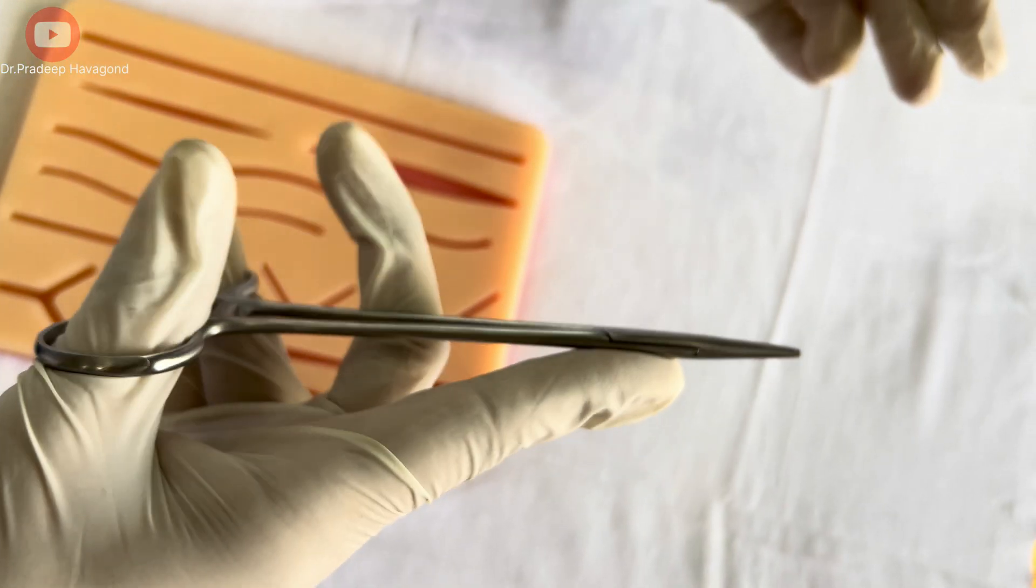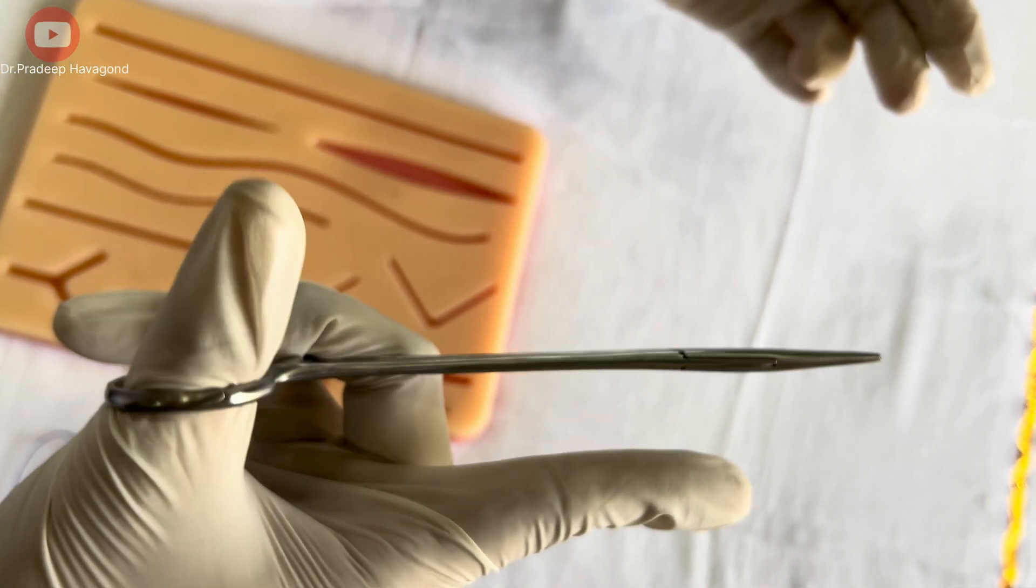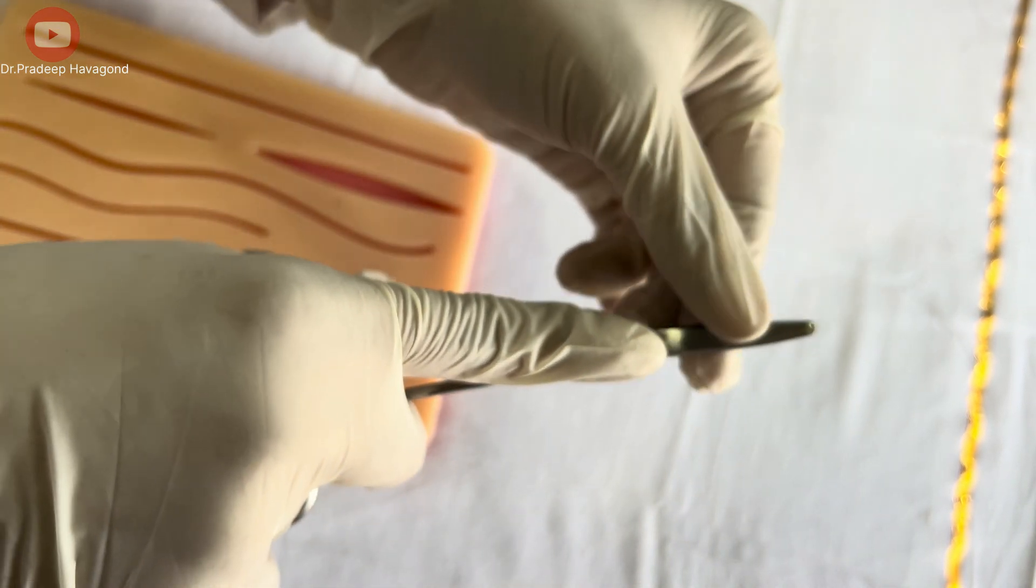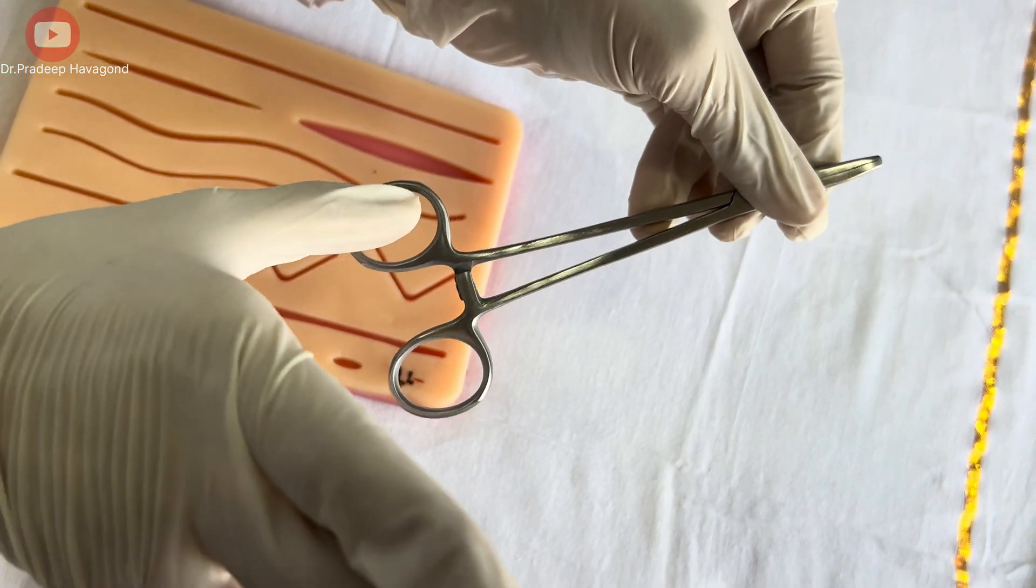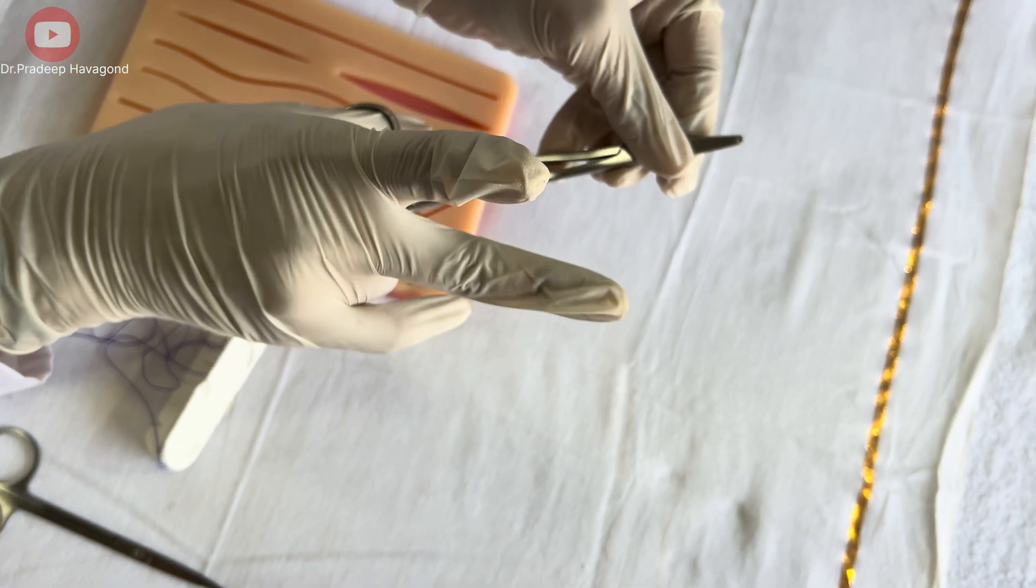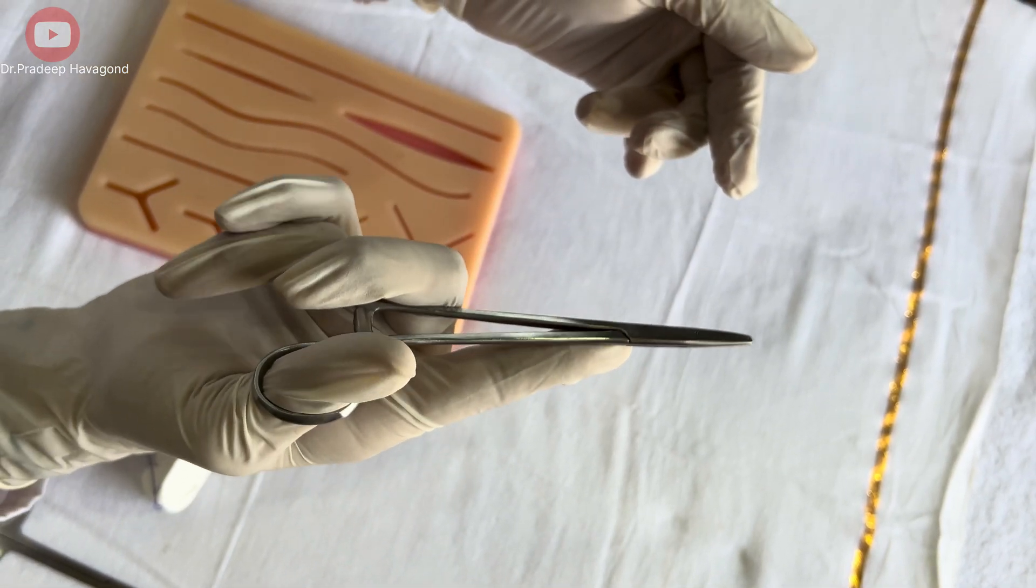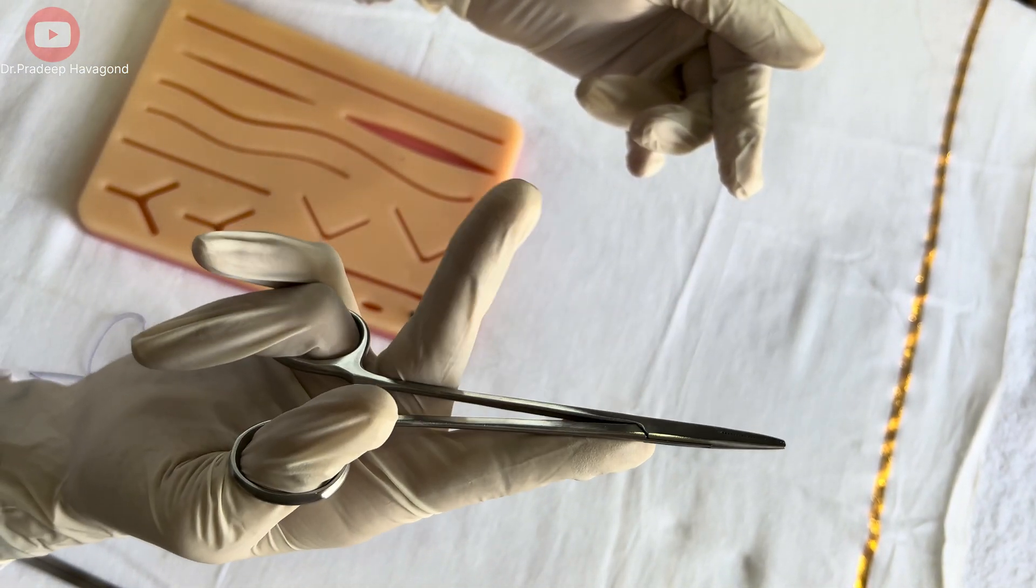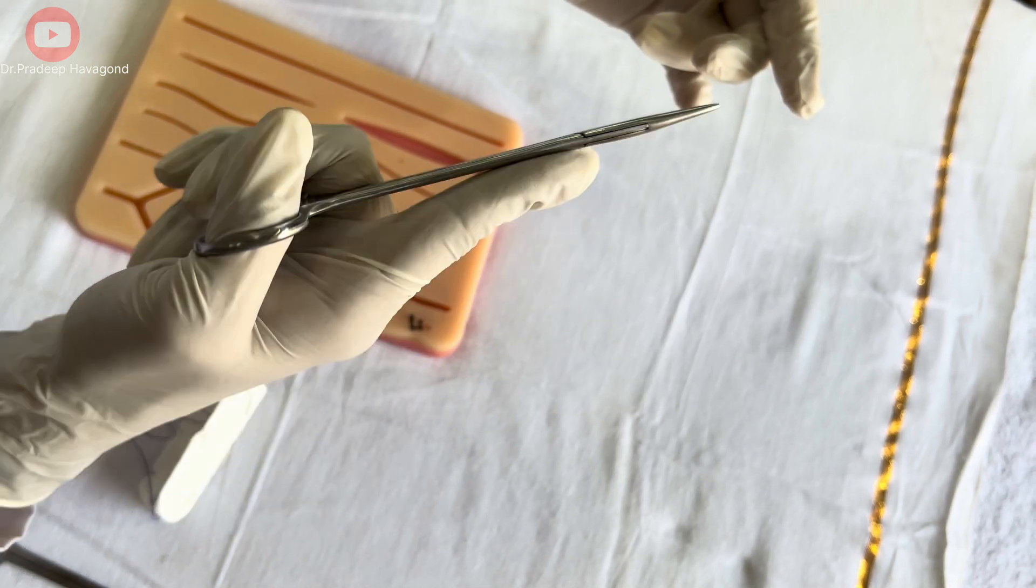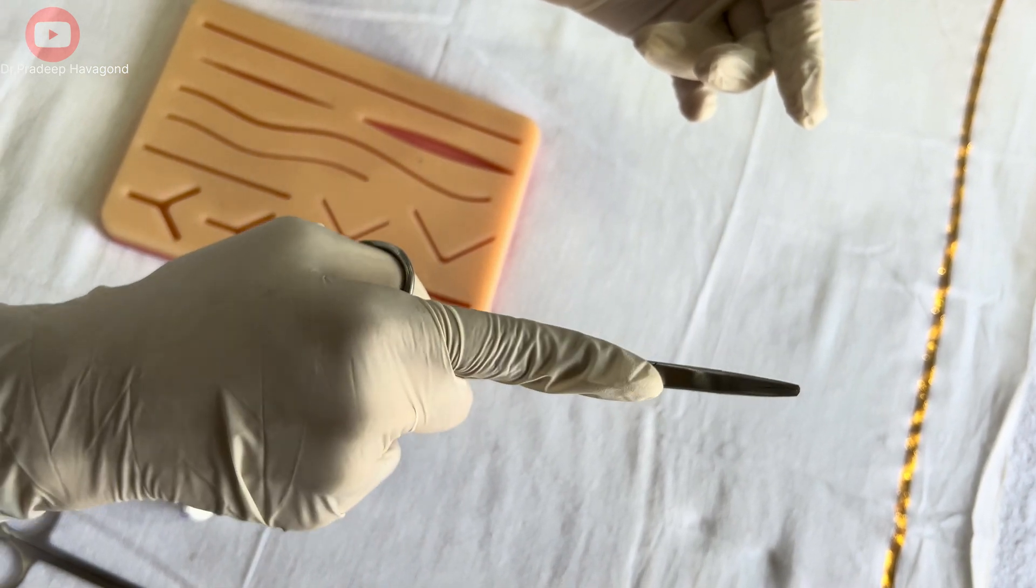First of all, you should know how to hold the needle holder. You have to insert your thumb in the upper loop and ring finger in the lower loop. Index finger will stabilize the needle holder from the side, and the middle finger will stabilize the needle holder from below.